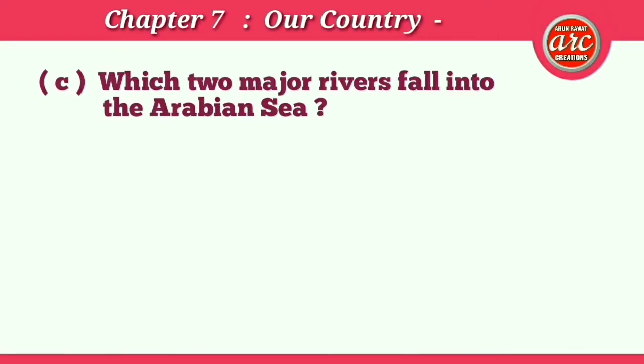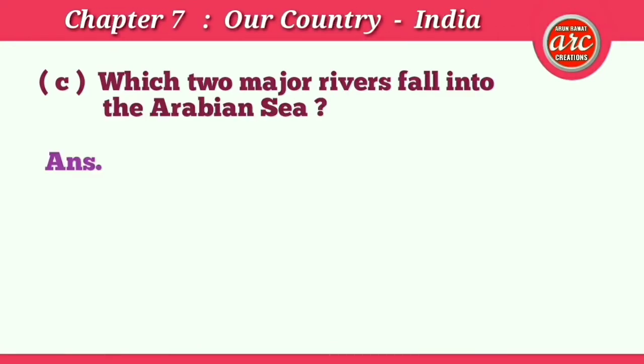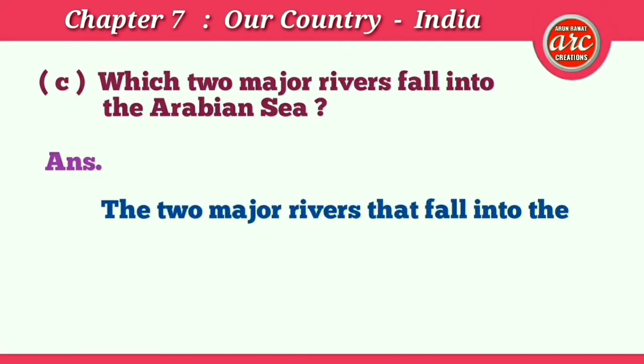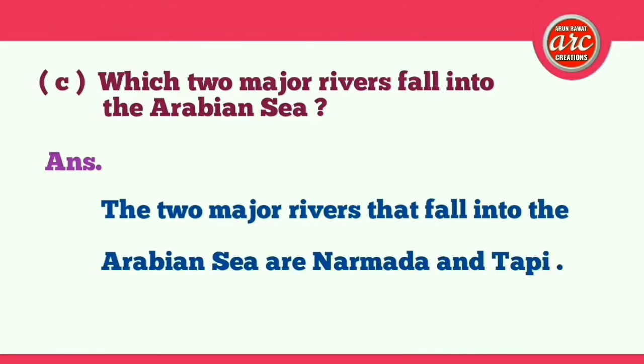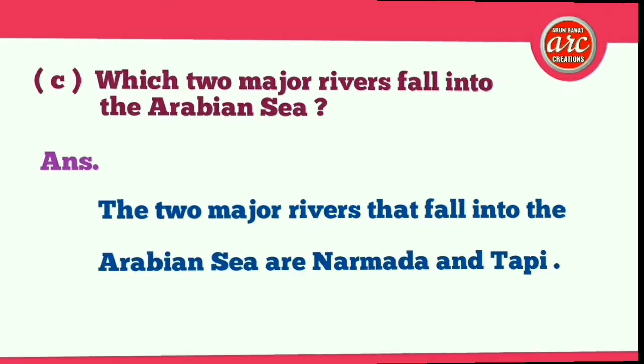(c) Which two major rivers fall into the Arabian Sea? Answer: The two major rivers that fall into the Arabian Sea are the Narmada and the Tapi.